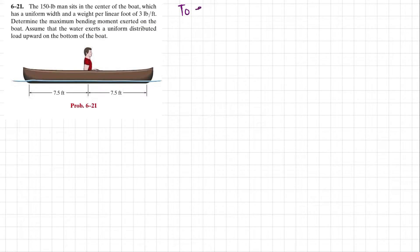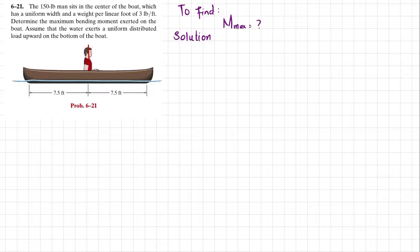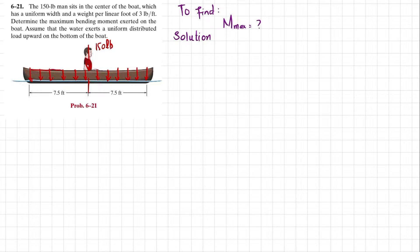What we have to find is the maximum bending moment. The first step is to draw the free body diagram. This man exerts a 150 pound force in the mid. Due to this boat it exerts a uniformly distributed load on water, and this uniformly distributed load will be equal to 3 pounds per feet.